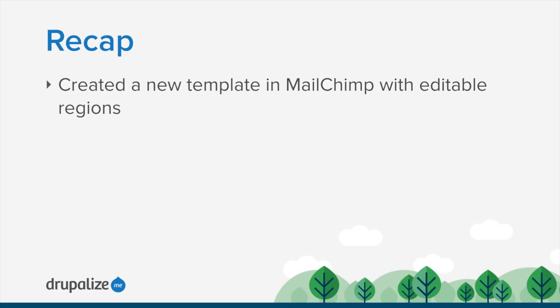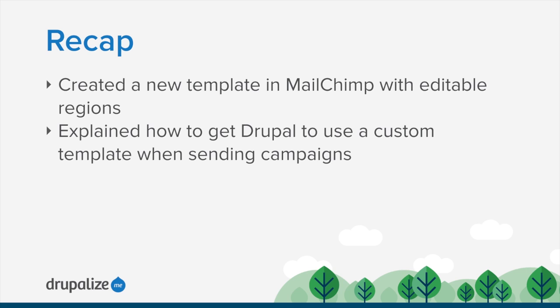There's another tutorial on sending campaigns through Drupal if you want to continue on. So that's the process for creating a template in MailChimp that is also available using the MailChimp campaigns module in Drupal. In this tutorial, we looked at how to create a new template in MailChimp, export it as HTML, edit the HTML to add mc:edit attributes to elements so that MailChimp can treat them as editable regions, and then re-import them as a code-your-own template so they're available within the Drupal user interface when somebody wants to send a MailChimp campaign.